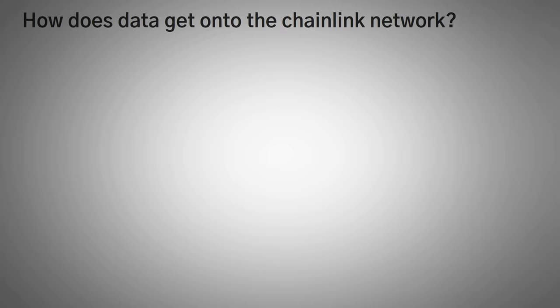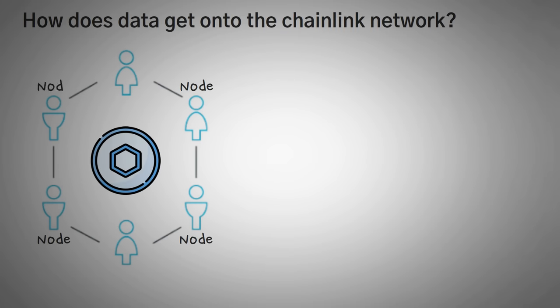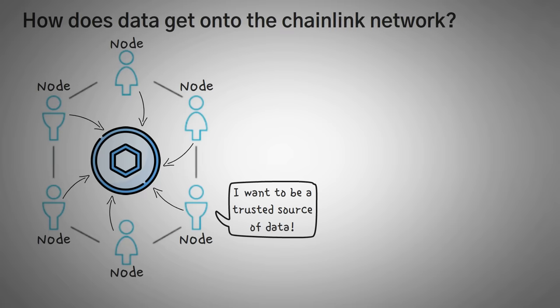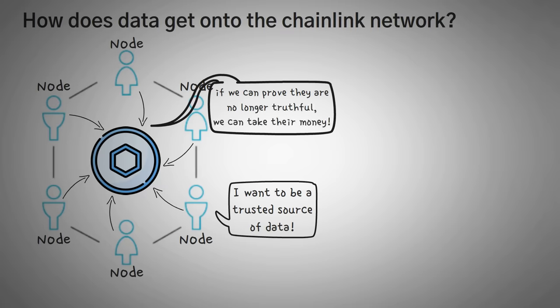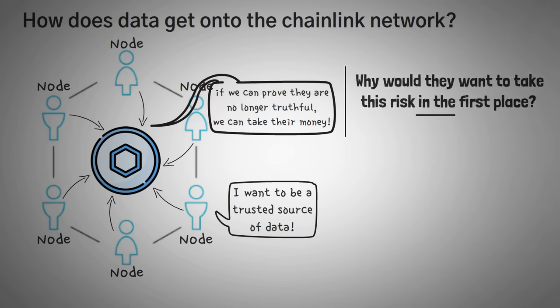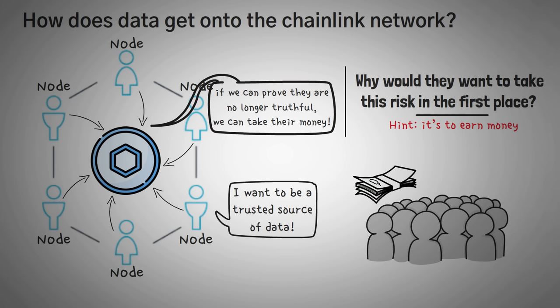First off, how does data get onto the Chainlink network? The answer is node operators. And this is a fancy word for someone who locks up some of their money and says, I want to be a trusted source of data. Ask me any question. Now you might be wondering, why do they have to lock up their money? Well, if we can prove that they are no longer being truthful, we can actually take that money from them. This incentivizes them to always tell the truth. However, the next question you might have is why would they take this risk in the first place? Here's a hint, it's to earn money. People pay these node operators to give them reliable and truthful outside real world data. It's a win-win situation.